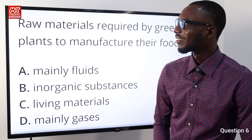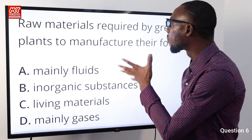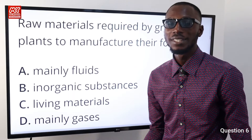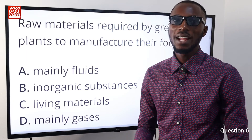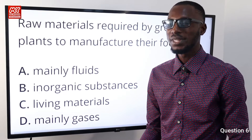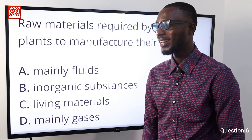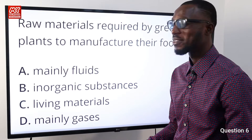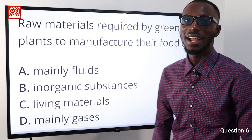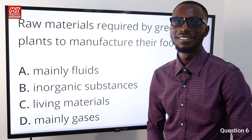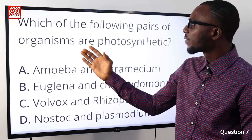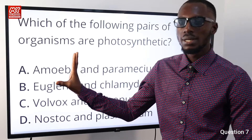Question number six: the raw materials required by green plants to manufacture their food are what? They are majorly inorganic materials, which involve carbon dioxide and water to form glucose — that is the chemical equation for photosynthesis. So option B is correct: inorganic substances.